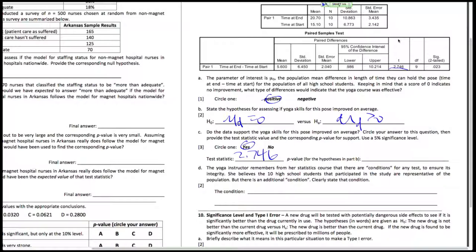So there are conditions we need to check, right? The first condition is that we have representation for the population, but the other condition is that we need the mu d, the population of differences, to be normal.